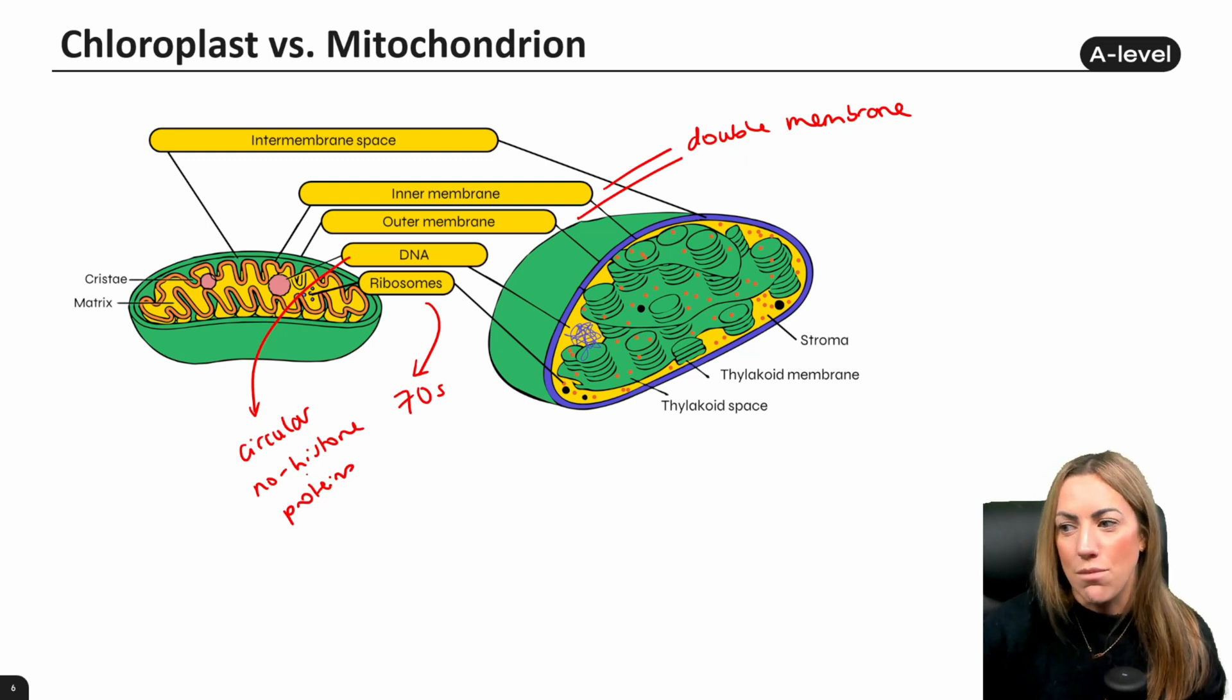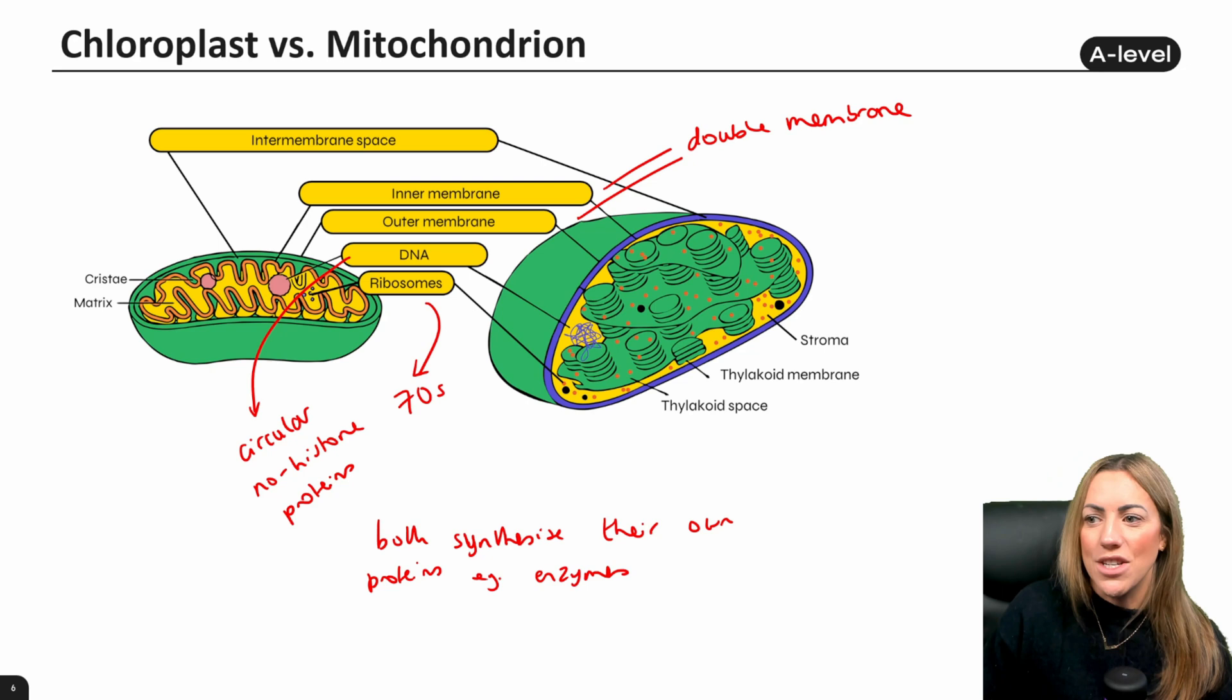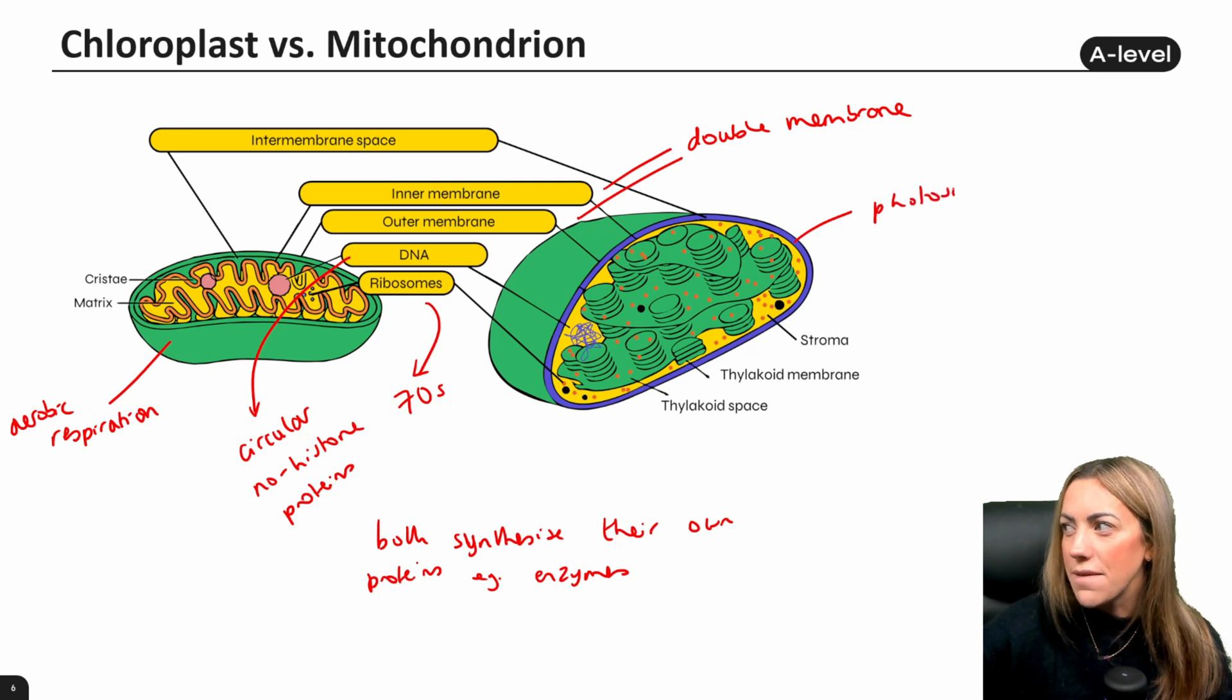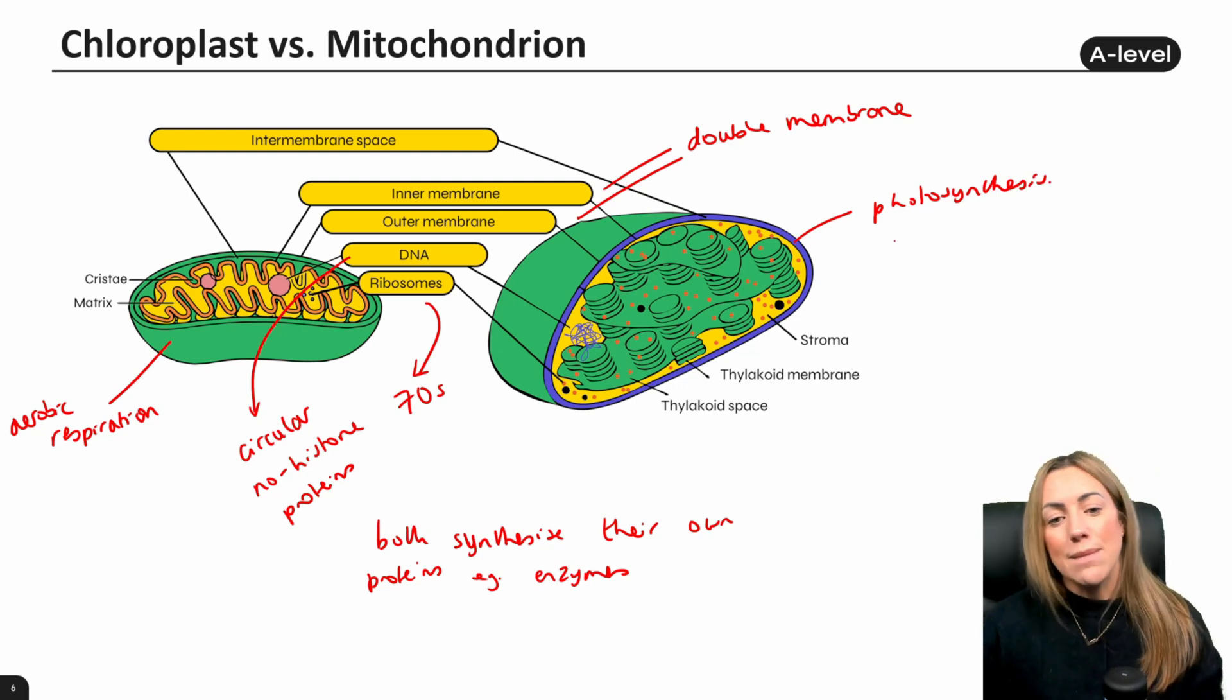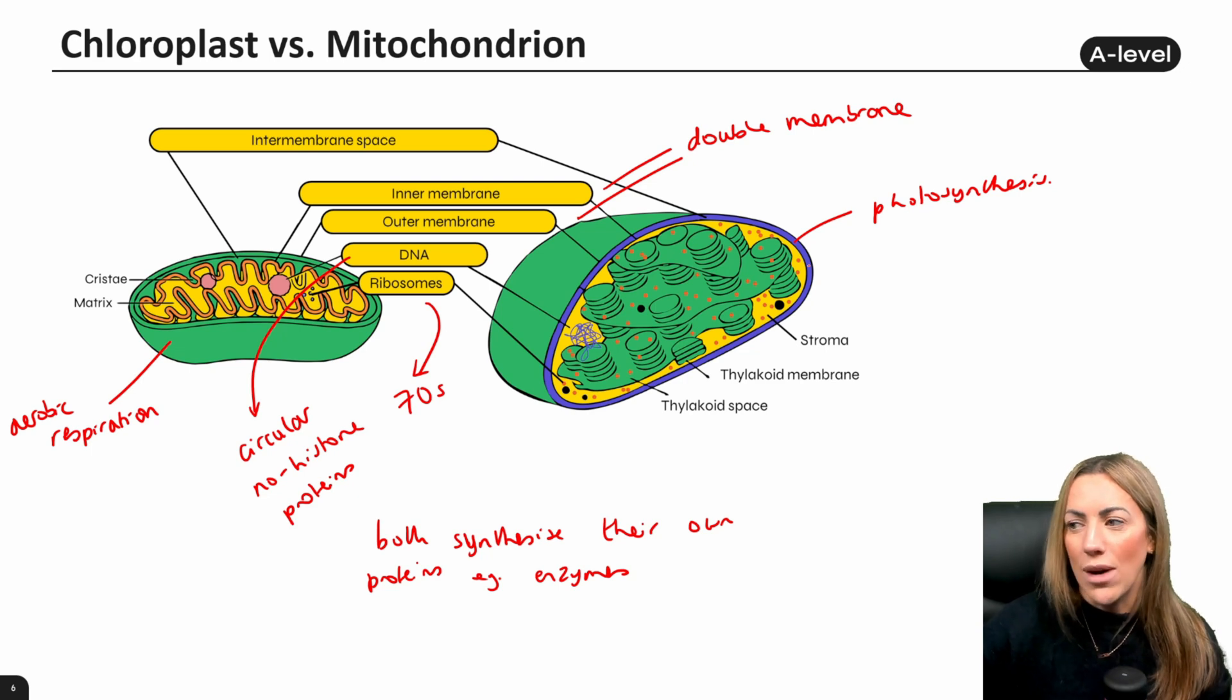Because they both have their own DNA and their own ribosomes, they can both synthesize their own proteins, for example enzymes. Because both of these organelles are responsible for carrying out metabolic reactions, right? The mitochondria carry out respiration, specifically aerobic respiration, and the chloroplasts carry out photosynthesis. These are both metabolic reactions. They do use enzymes, and these organelles are able to produce their own enzymes because they've got the DNA to code for the sequence of amino acids, and they've got the ribosomes to actually manufacture them or put those amino acids together in the correct order.